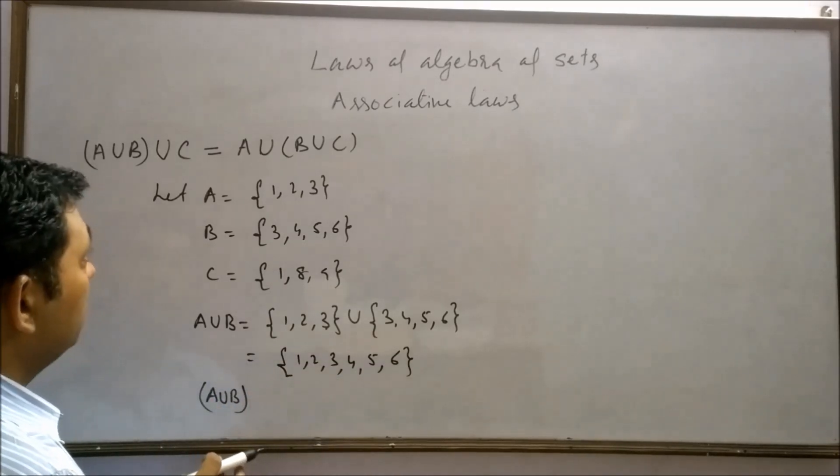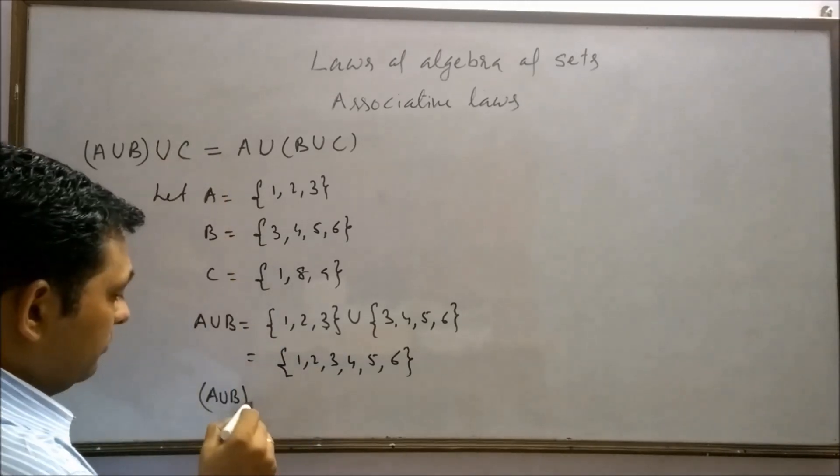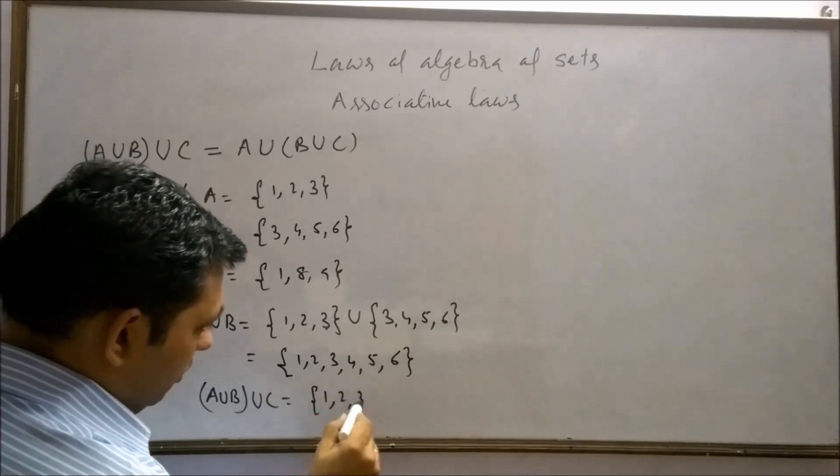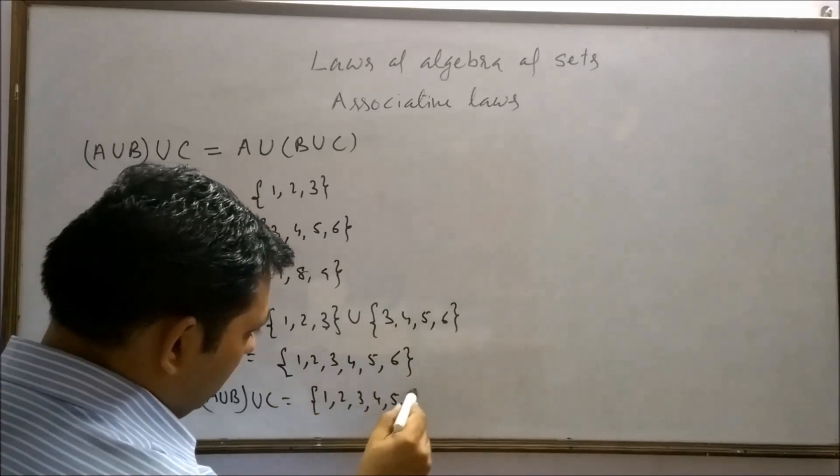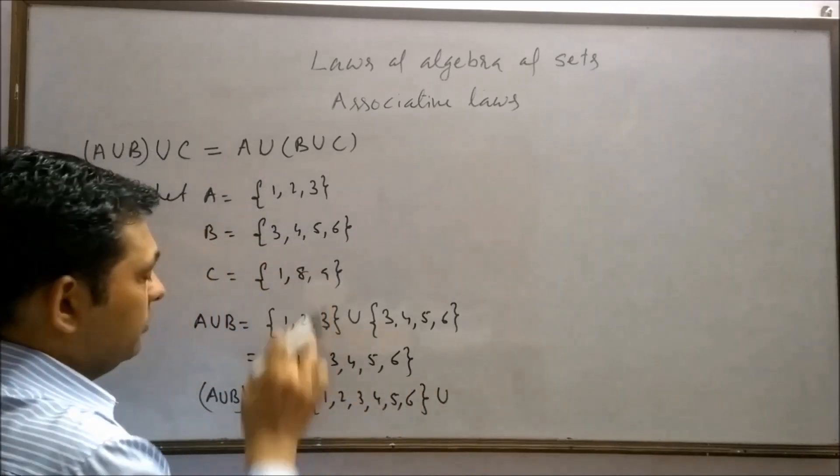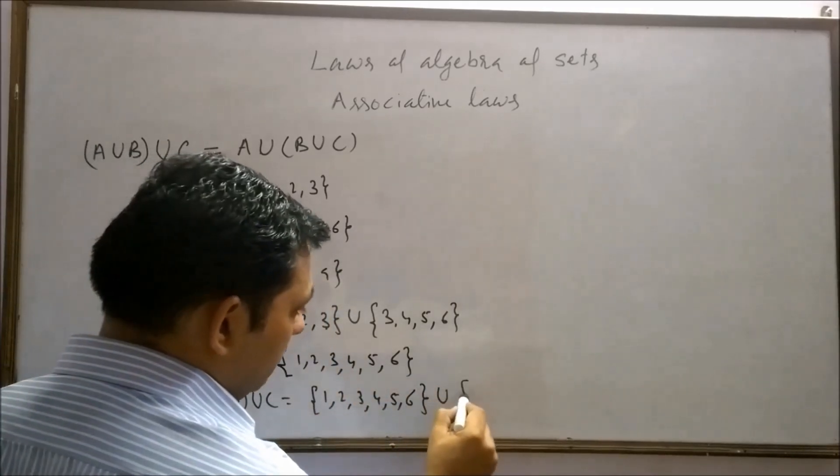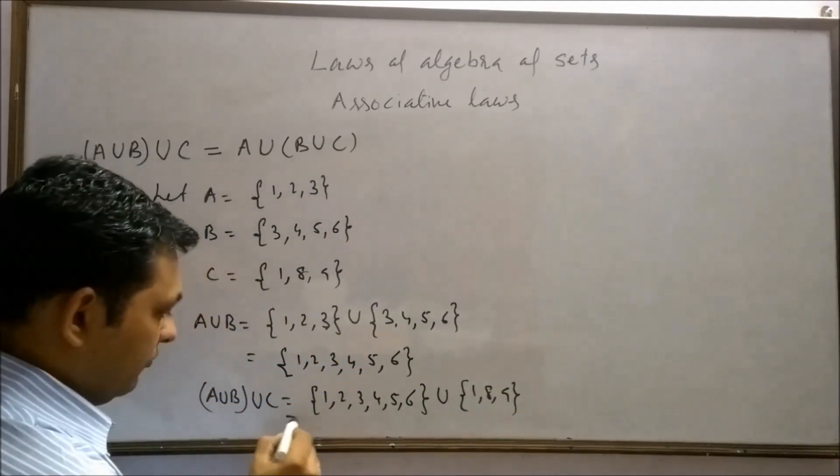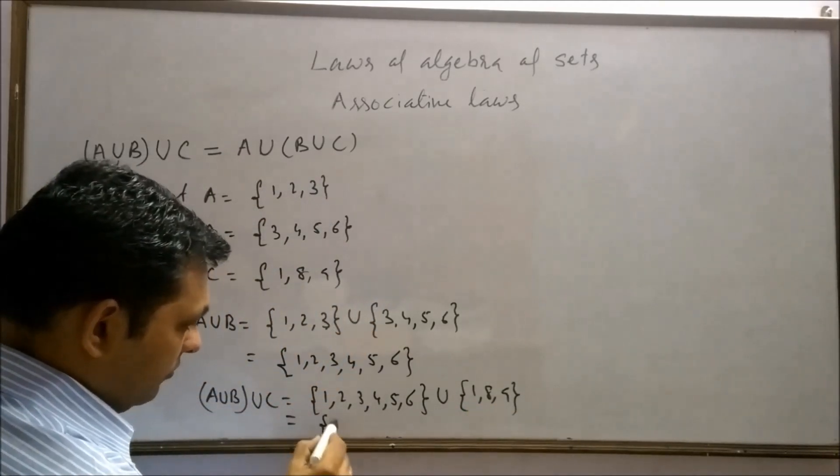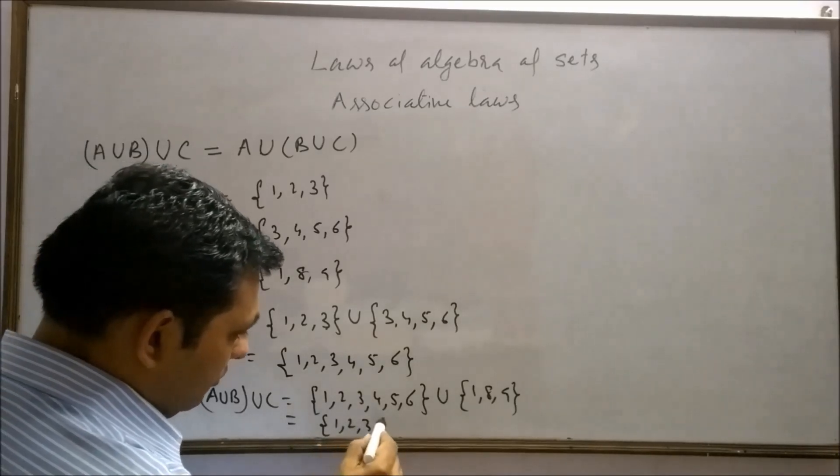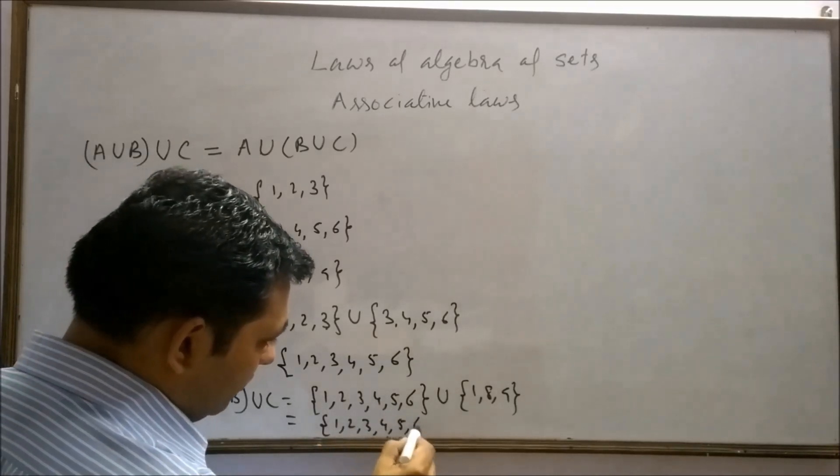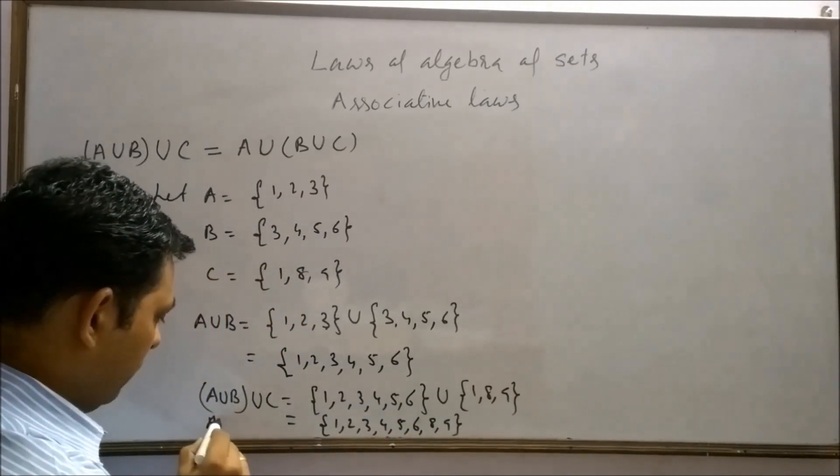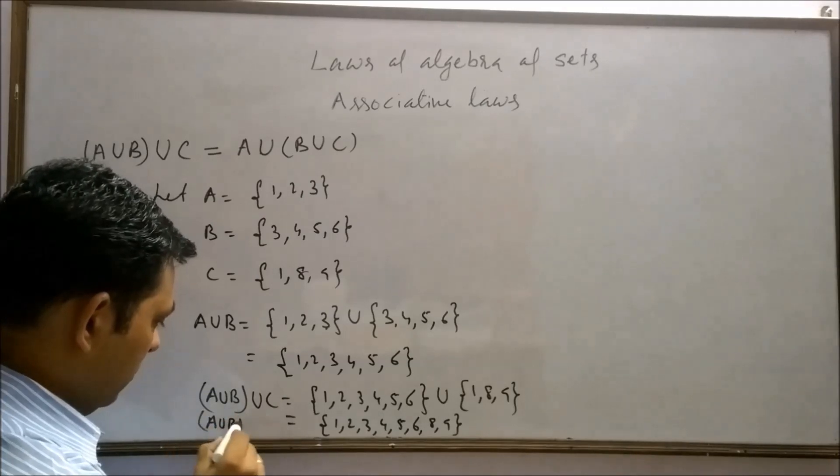Now combine this set with set C. 1, 2, 3, 4, 5, 6 union set C contain 1, 8, and 9. Thus we will get a set 1, 2, 3, 4, 5, 6, 8, and 9. This is the result for A union B union C.